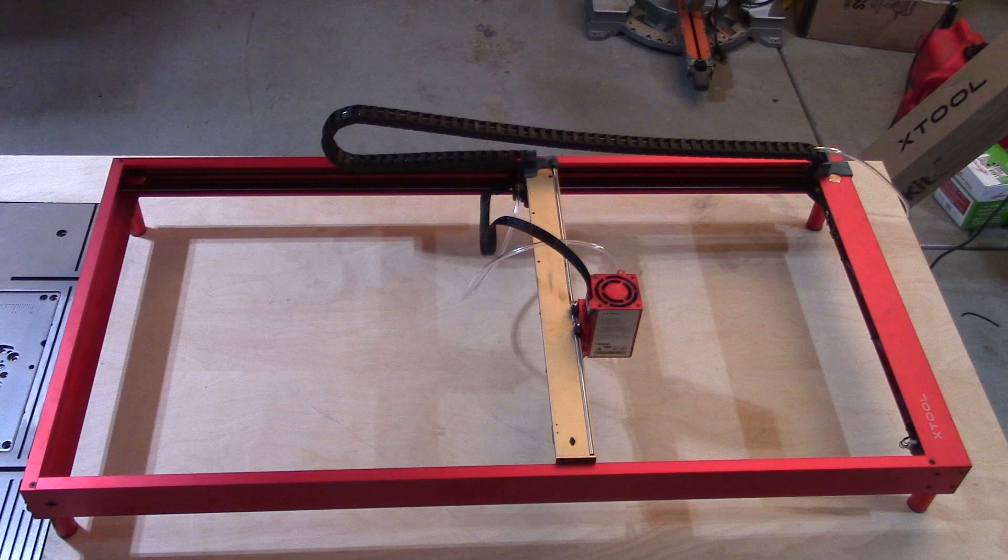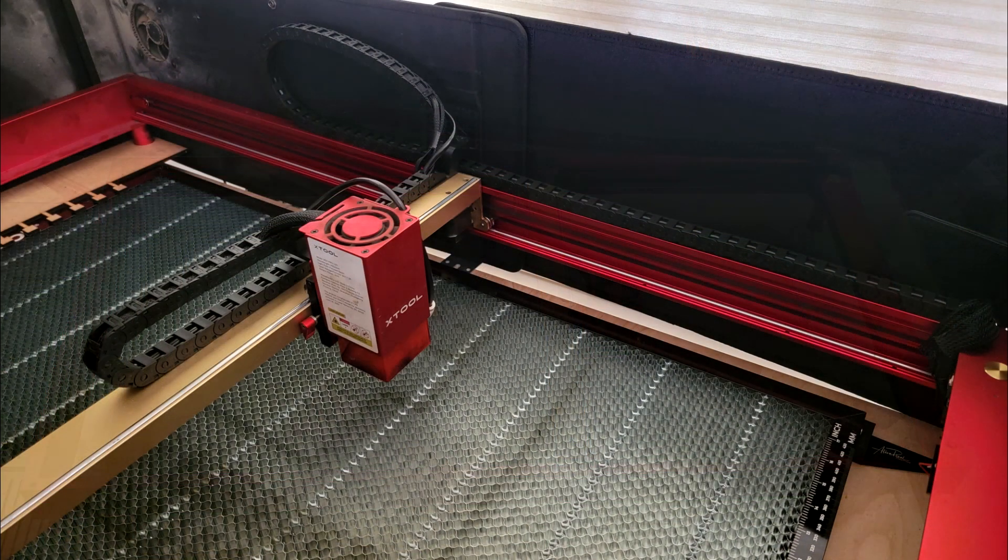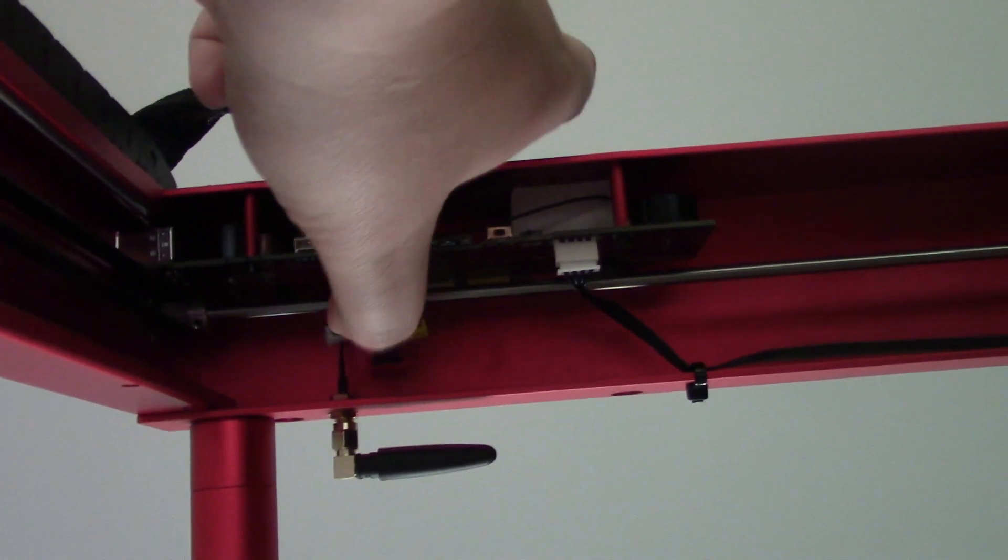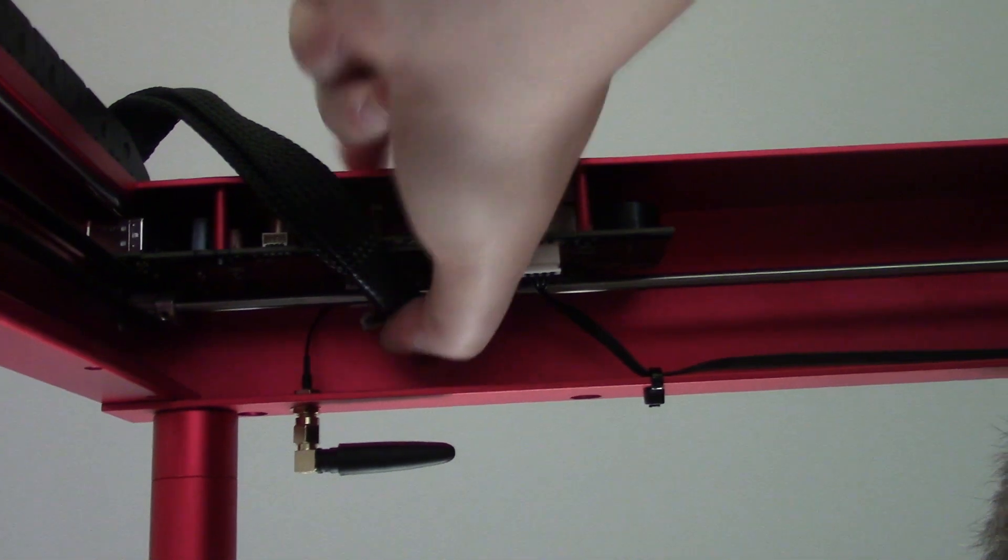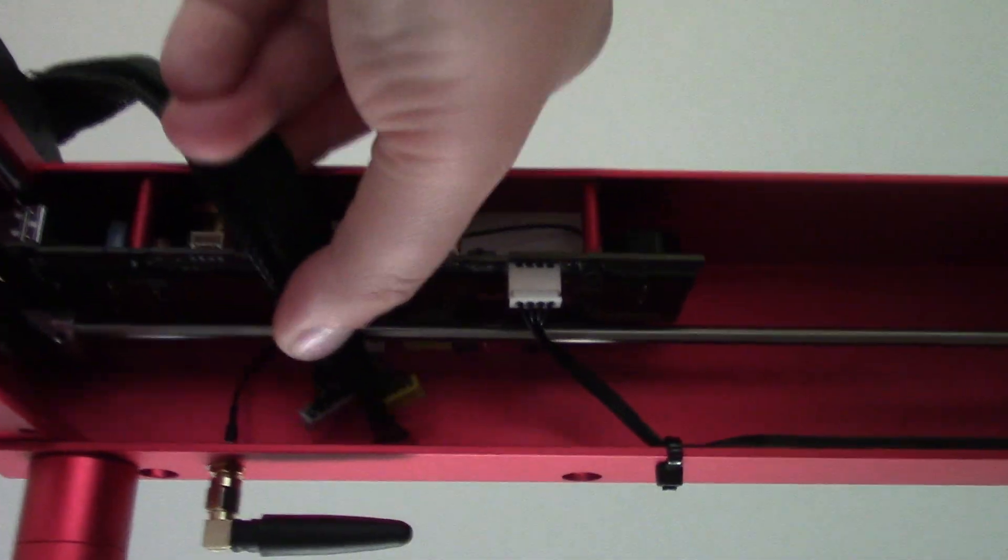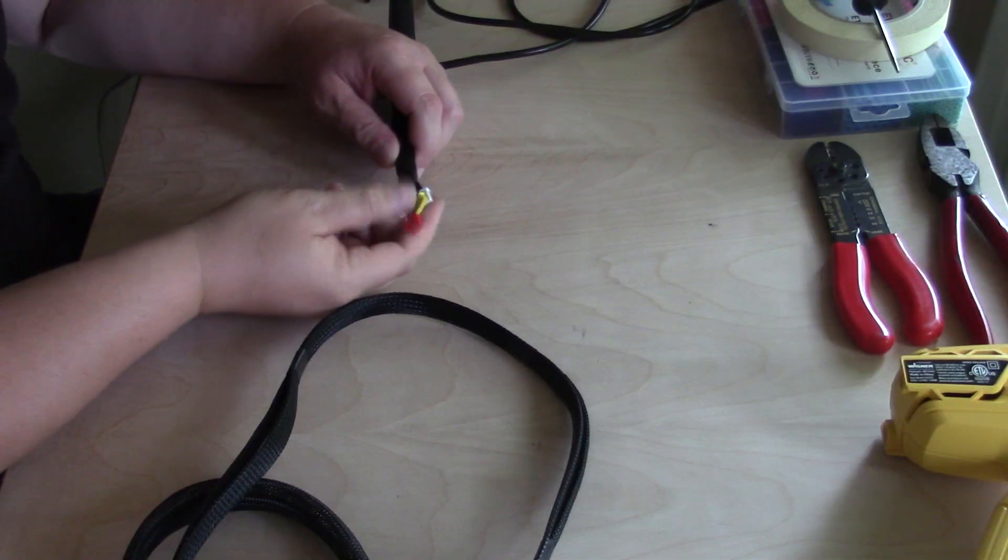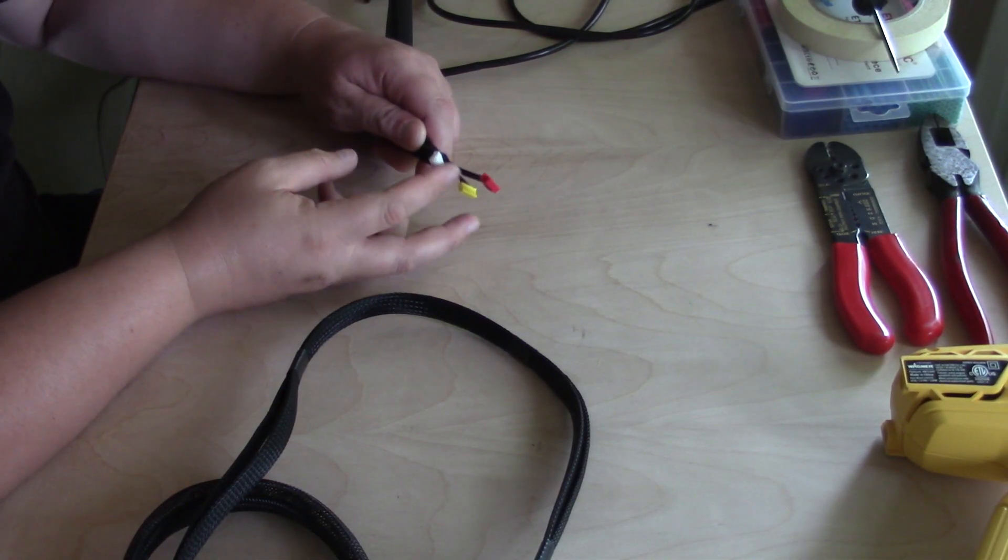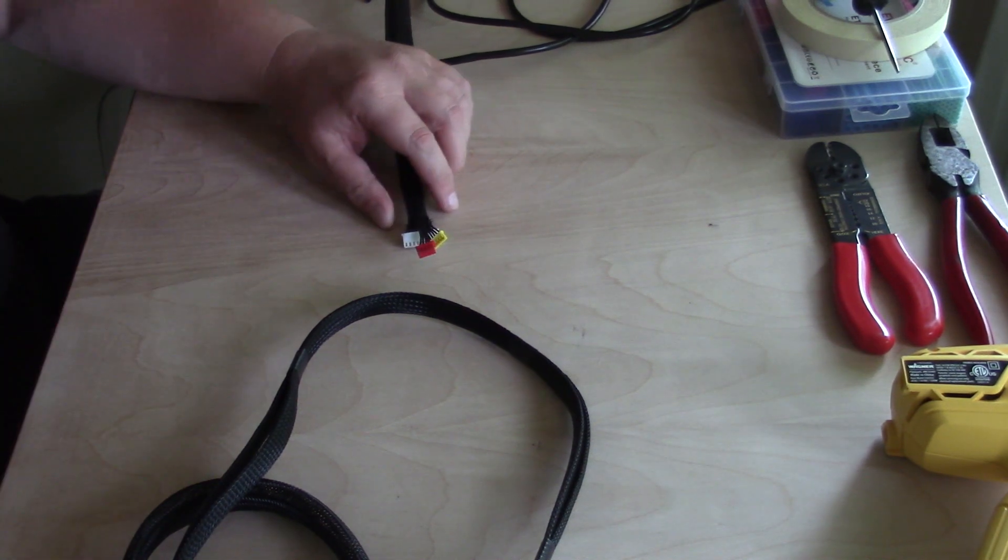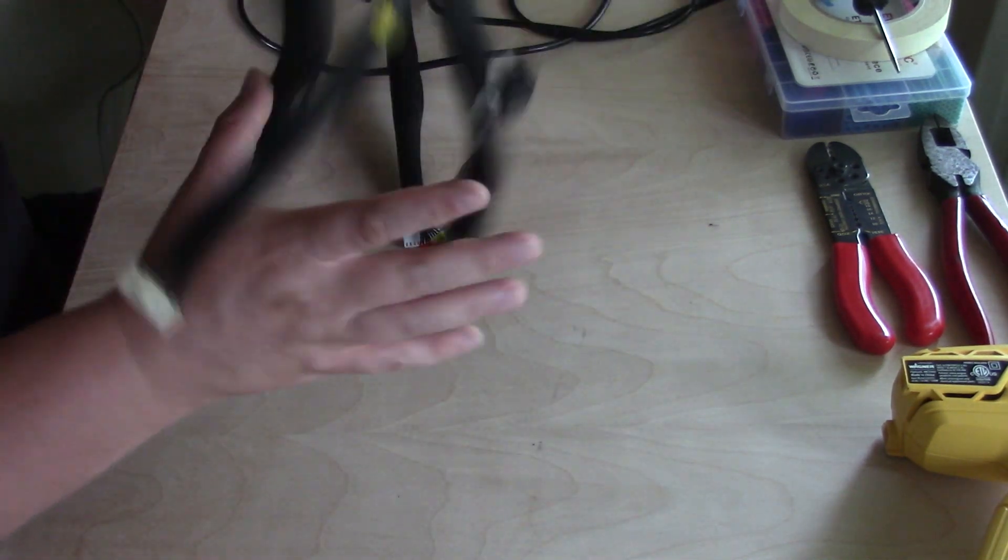I recently added extension rails onto my X-Tool D1 Pro. I then added a drag chain that made my wires just a bit short from being able to be plugged in comfortably without putting tension on the connectors. Not wanting to break a wire, I decided I would extend my cable connections. In order to do this, we will need two sets of wires. I'm using the one that came with my extension kit and the set that came with my original D1 Pro.